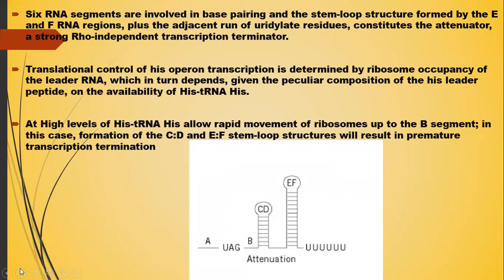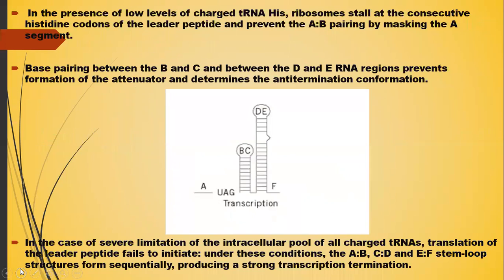At high levels of histidyl-tRNA, rapid movement of ribosomes up to the B segment occurs. In this case, formation of the CD and EF stem-loop structures results in premature transcription termination. In the presence of low levels of charged histidyl-tRNA, ribosomes stall at the consecutive histidine codons of the leader peptide and prevent AB pairing by masking the A segment. Base pairing between the B and C, and between D and E RNA regions prevents formation of the attenuator and determines the anti-termination conformation.